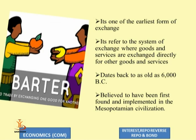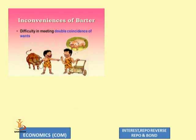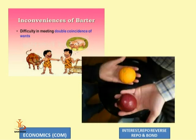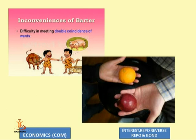But then what happened? Consider the school example again — you always want stickers to make your book colorful, but is it necessary that the other person has stickers and is ready to give them to you? This is the limitation of the barter system — the difficulty in meeting the double coincidence of wants. If you want stickers but the other person also wants stickers, there is no exchange. Similarly, you cannot always exchange goods against goods or goods against services.